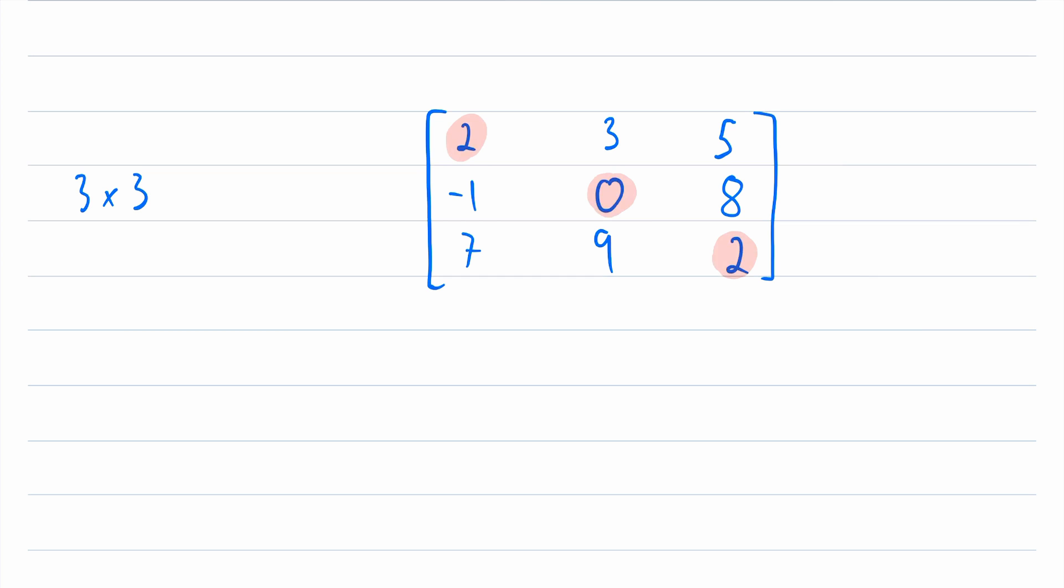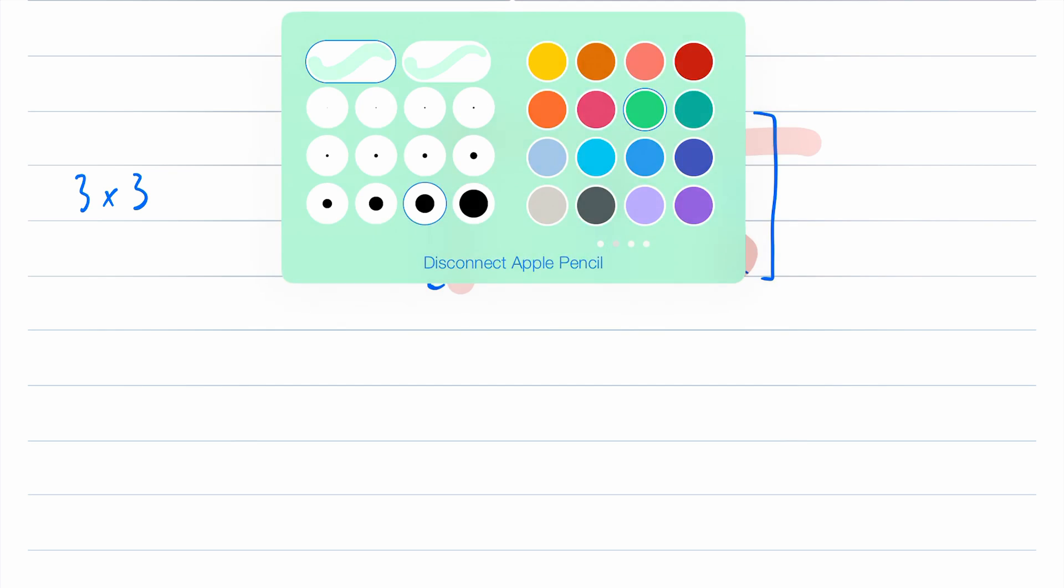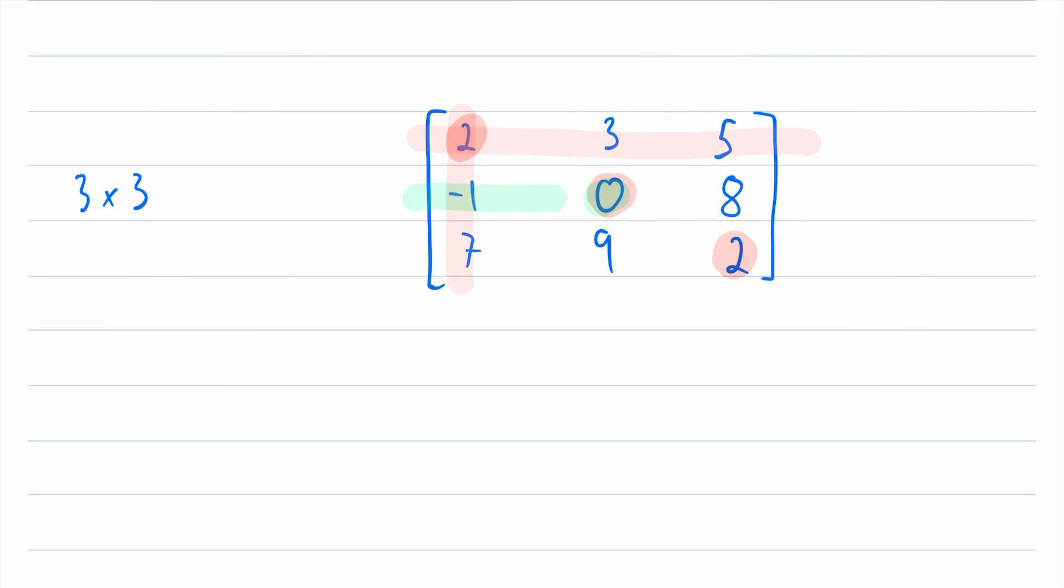So by that, I mean this entry here, two, is in the first row and first column. And then this zero here is in the second row and second column. And then this two down here is in the third row and third column.